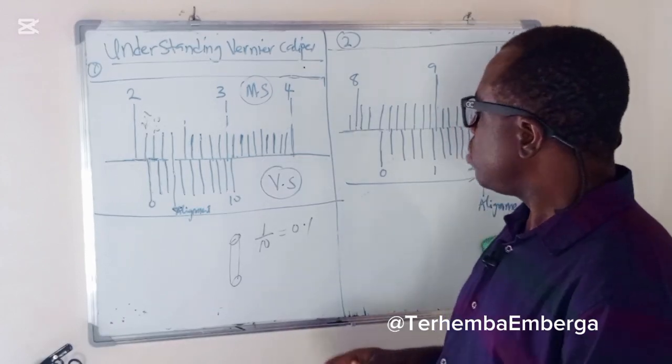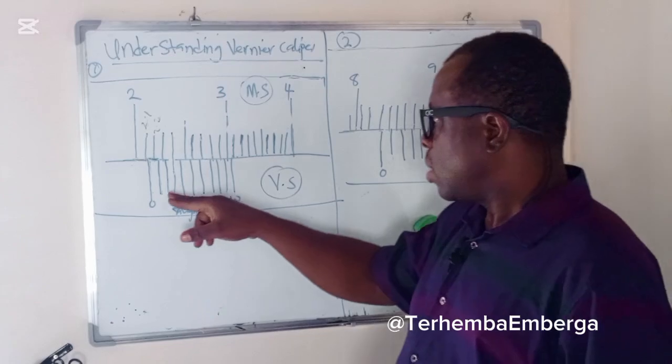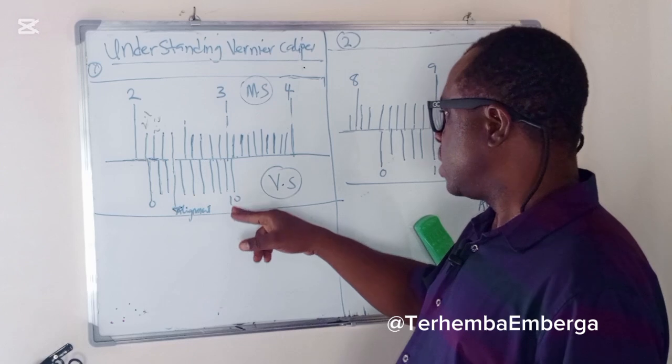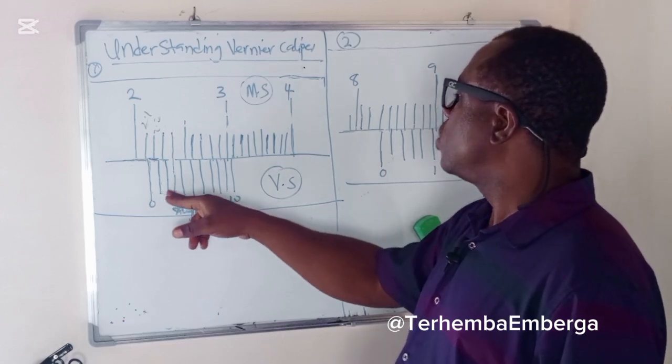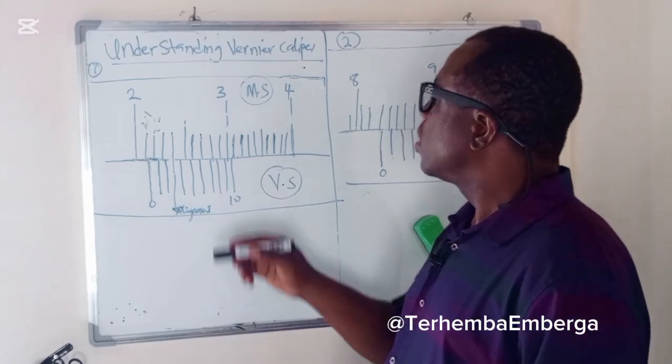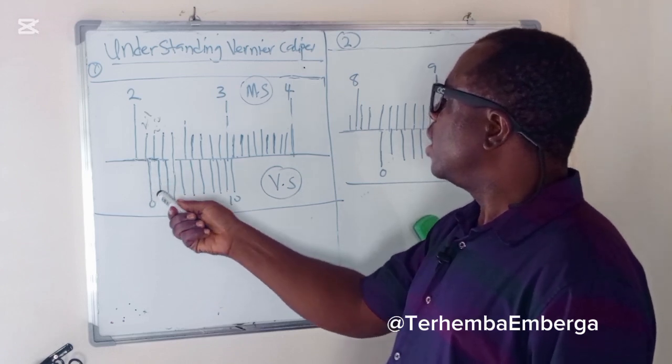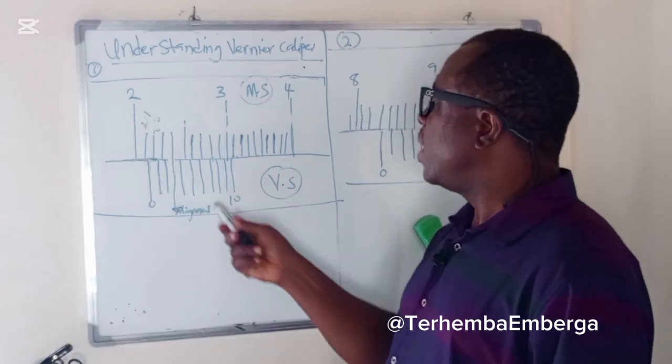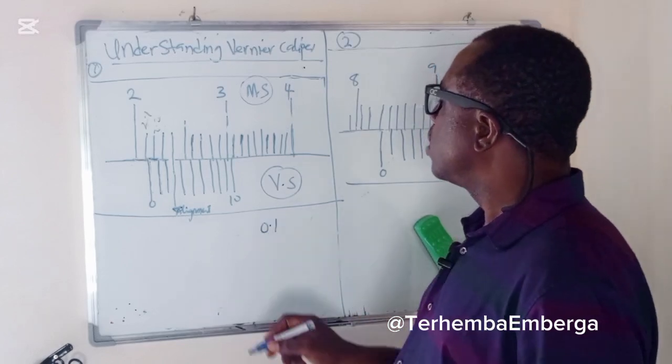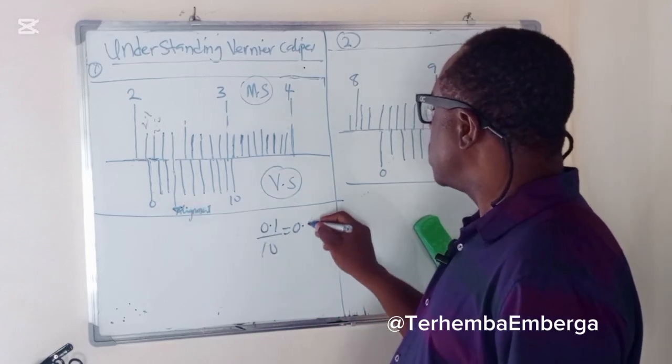So the vernier scale or the secondary scale has 10 divisions. It means you have 1, 2, 3, 4, 5, 6, 7, 8, 9, 10. So what is the dimension between the divisions on the vernier scale? Remember, on the main scale we have 0.1. So on the vernier scale if we divide 0.1 by 10, because we have 10 divisions, that gives you 0.01.